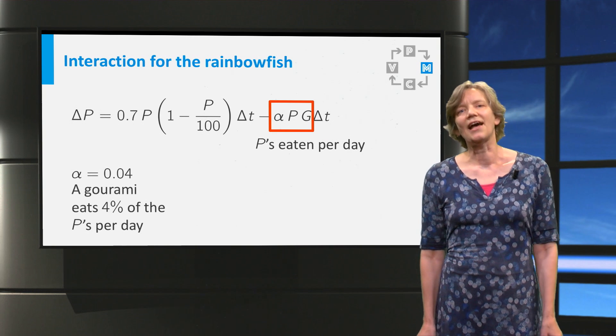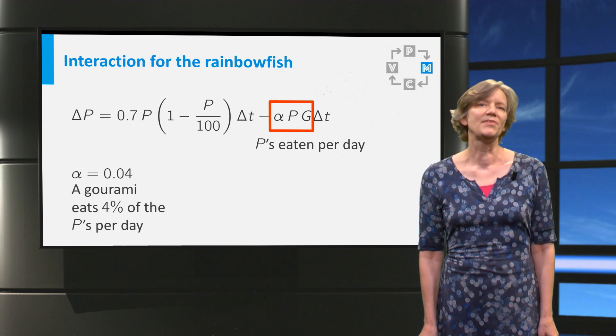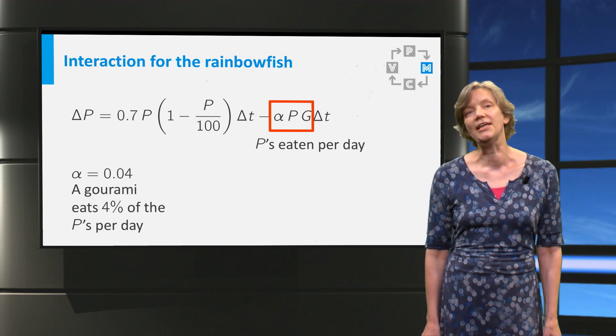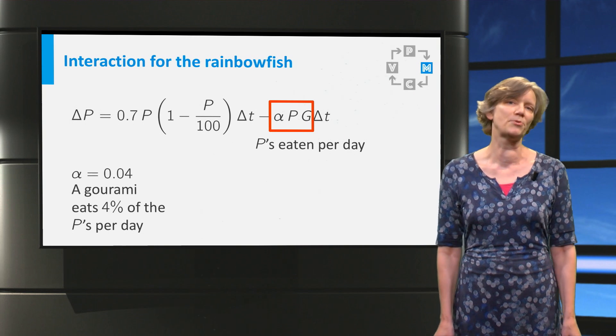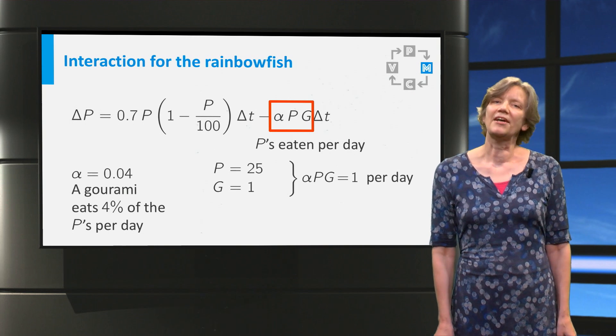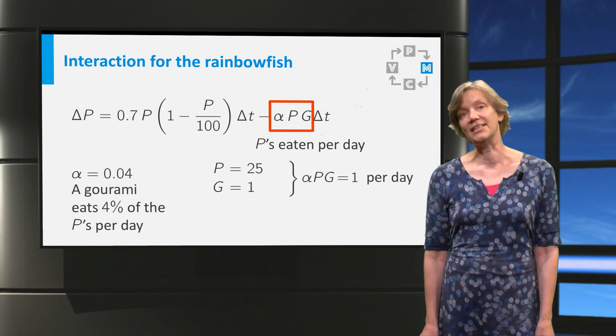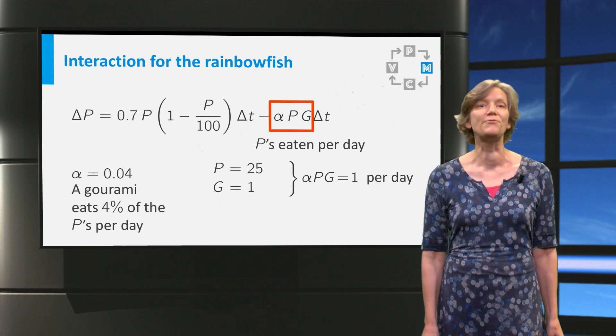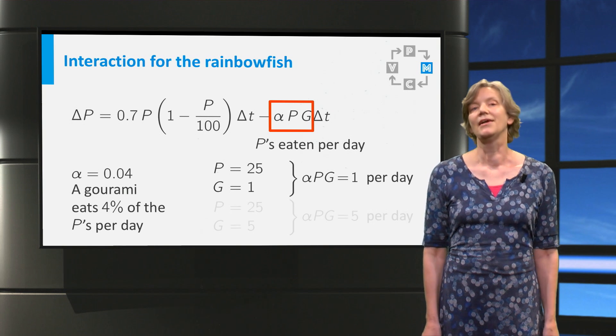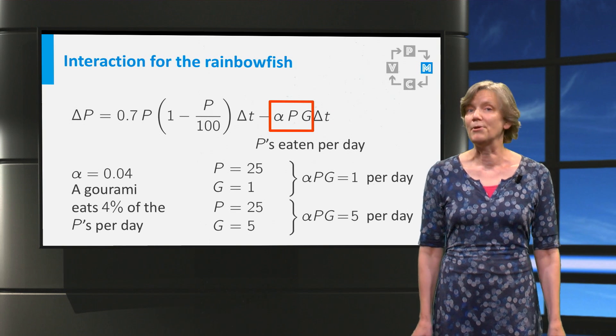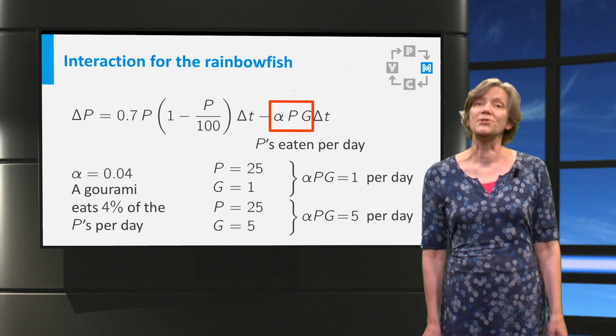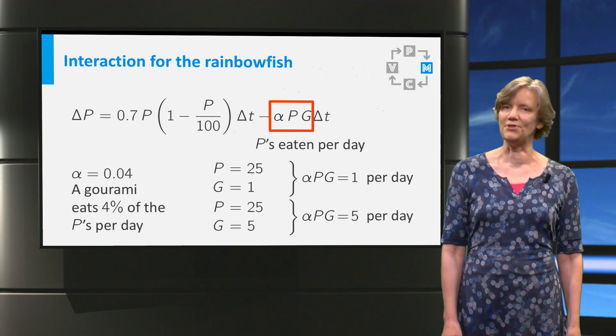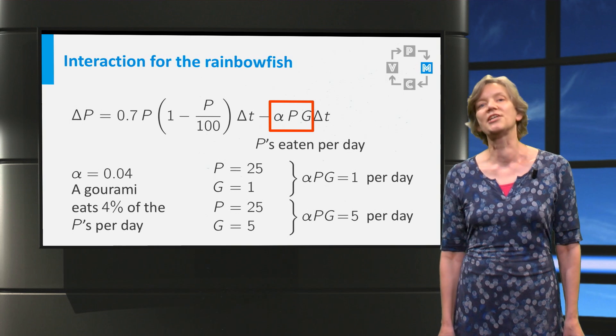Let us take alpha equal to 4 percent. This means that each gourami eats 4 percent of the rainbow fish per day. If there are 25 rainbow fish in a tank and 1 gourami, the gourami would eat 1 rainbow fish a day. If there are 25 rainbow fish, 5 gouramis would eat 5 times as many rainbow fish a day. So that scales as you would expect.